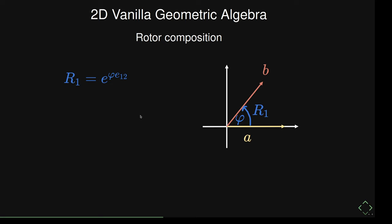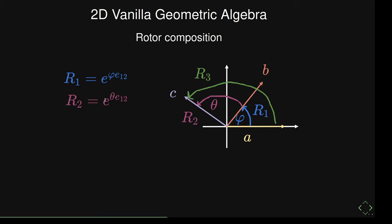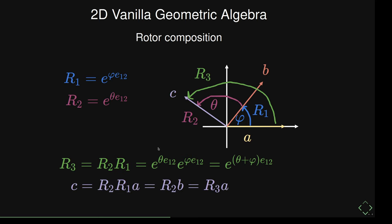Another cool thing: if we want to compose rotations — one rotation then another — we just construct two rotors, R1 rotating by φ and R2 rotating by θ. To compose them, all we need to do is multiply the two rotors together to get R3. You end up just adding the angles in the exponential. Instead of multiplying A by R1 and then by R2, you can multiply A by this combined rotor to get C.